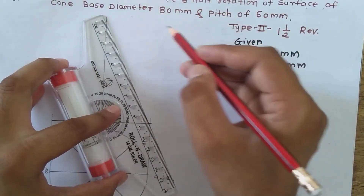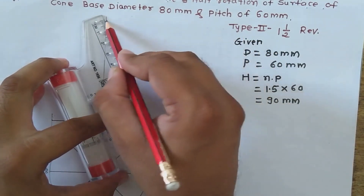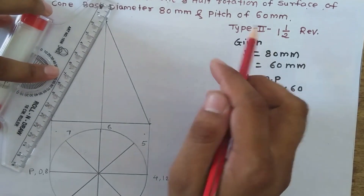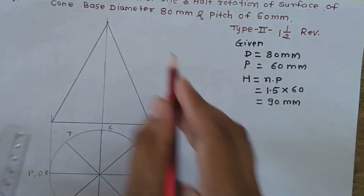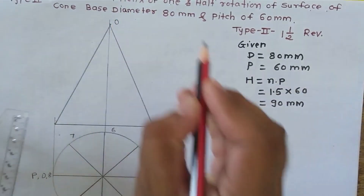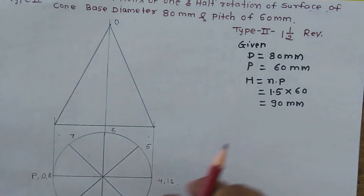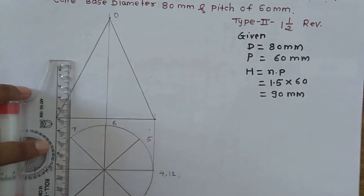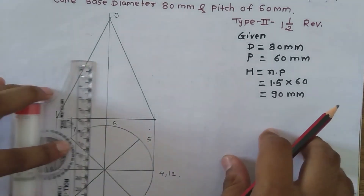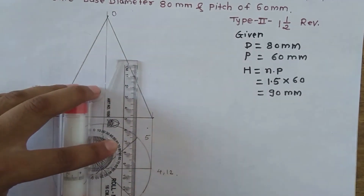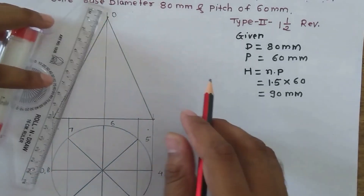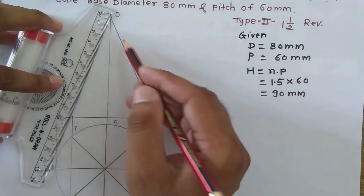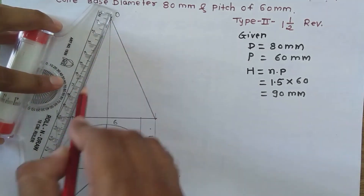Now we have the apex and we join it to the base with the help of generators — the first generator and the second generator of this cone. We name the apex as O. After this, we transfer all projections from the top view into the front view, transferring each projection line and then joining these projection points with the apex.